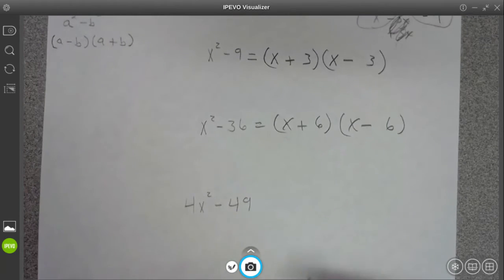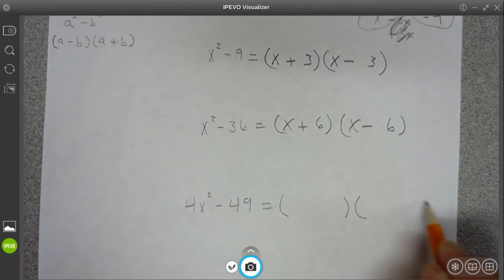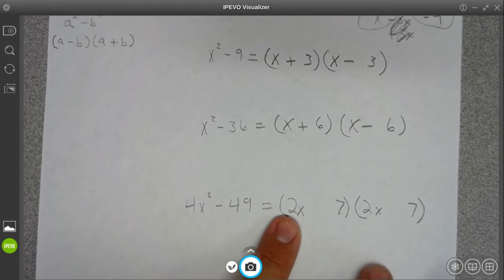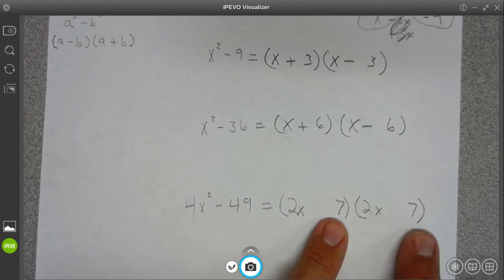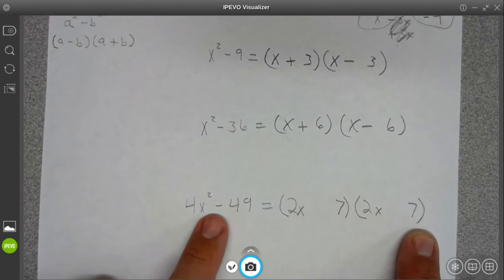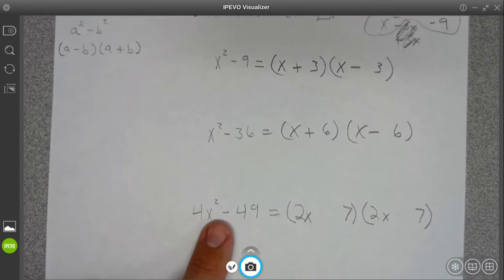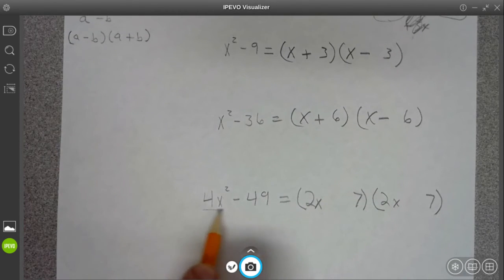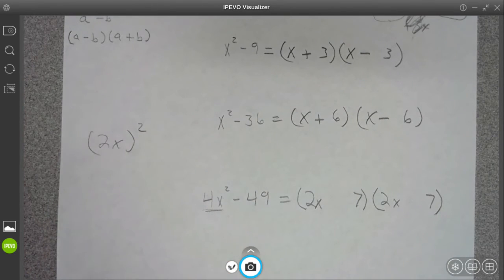What times itself will give you 49? That'd be 7. And what times itself will give you 4x squared? Well, 2 times 2 gives you 4, and x times x gives you x squared. 2x times 2x gives you 4x squared, 7 times 7 gives you 49. Because it's subtraction, that's what makes it difference of squares. 49 is a perfect square and so is 4x squared. You could rewrite this as (2x)² and 7² if you wanted. One's plus, one's minus.